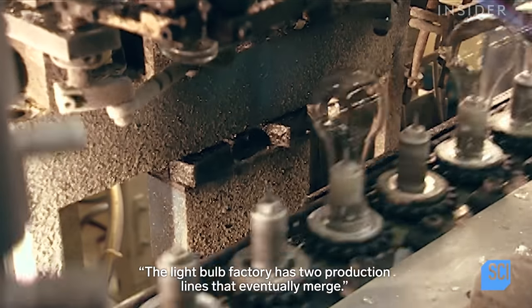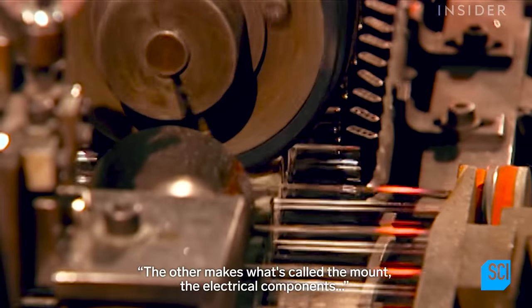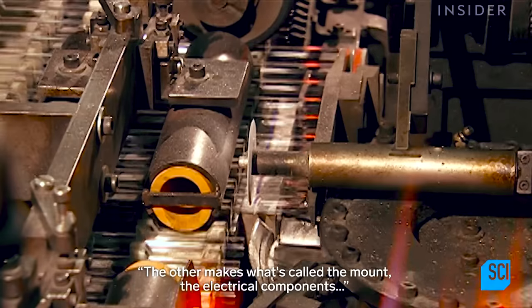The light bulb factory has two production lines that eventually merge. One prepares the glass bulb, the other makes what's called the mount, the electrical components that go inside it.